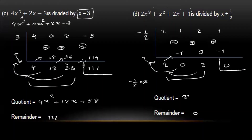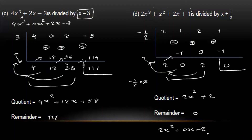Plus 2x squared. The total value of 0 is plus 2. This gives us 2x squared plus 0x plus 2. You can see zero x, so it is 2x squared plus 2.